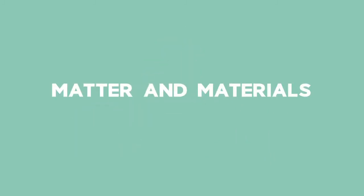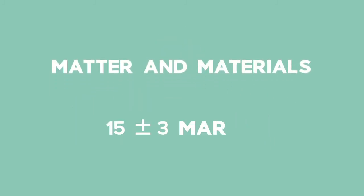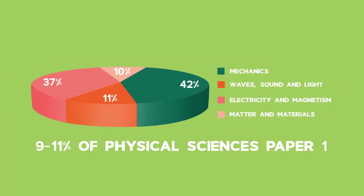Matter and Materials is roughly 15 ± 3 marks in the final exam, which is approximately 9-11% of Physical Sciences Paper 1.